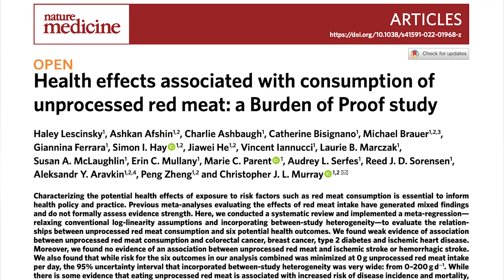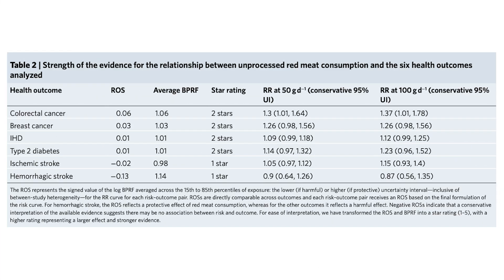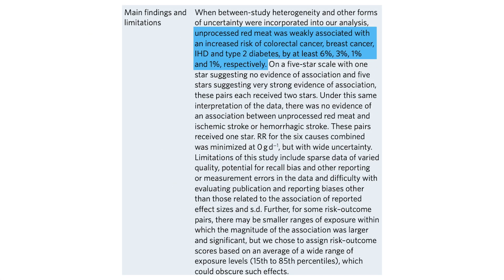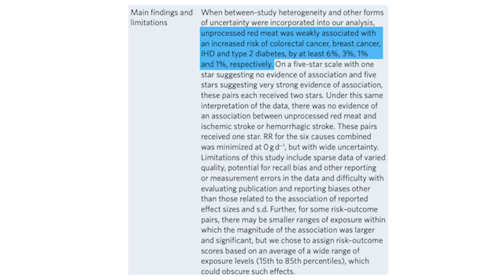A new study that's getting a lot of play in the media came out in Nature. It assessed the effect of unprocessed red meat consumption with various diseases like type 2 diabetes, breast cancer, heart disease, and some various other things. It got a lot of play because the conclusion was basically that there was either no evidence or just weak evidence for unprocessed red meat causing or being associated with the risk of these diseases.